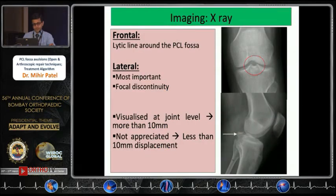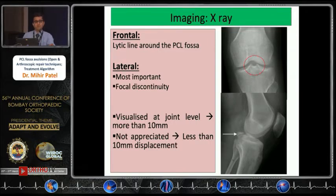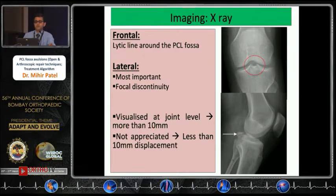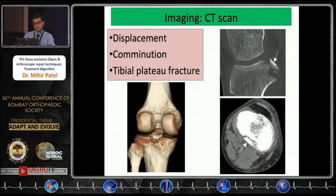On X-rays it could be easily missed, but with a fine eye you can pick up a subtle line around the intercondylar region. The lateral X-ray is diagnostic because it picks up the focal discontinuity. Importantly, if you can see the tibial avulsion of the PCL on a lateral X-ray, the displacement is 10 millimeters or more, because any displacement less than 10 millimeters will not be visible on a lateral X-ray.